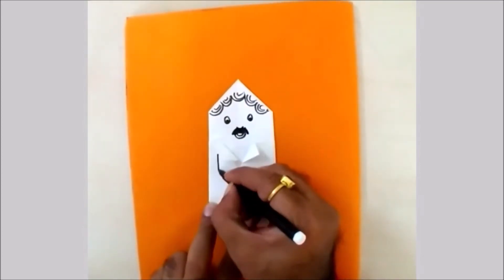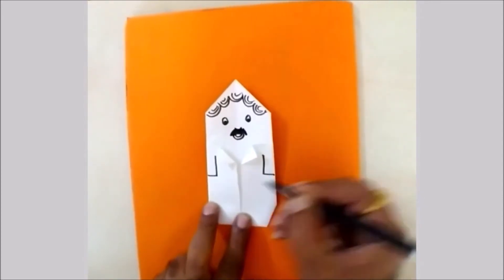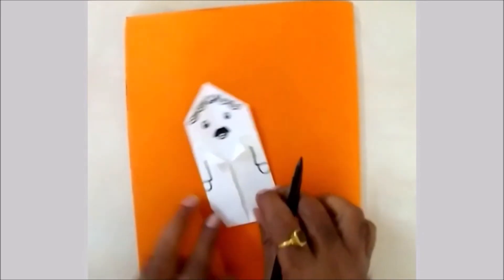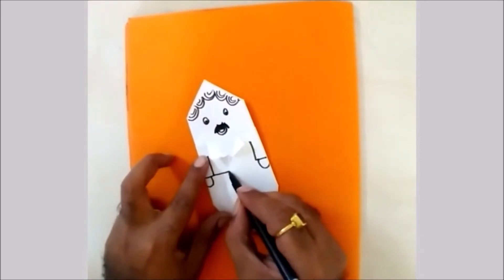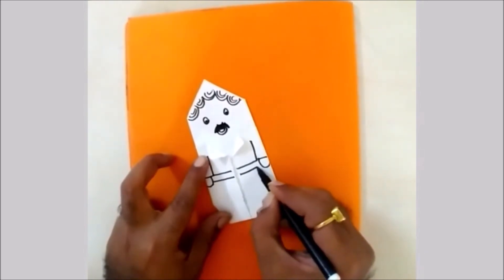One standing line for the sleeves, again sleeves. Curve for the hand, again curve for the hand. And here my shirt is going to be over, so here are two lines for showing the belt.